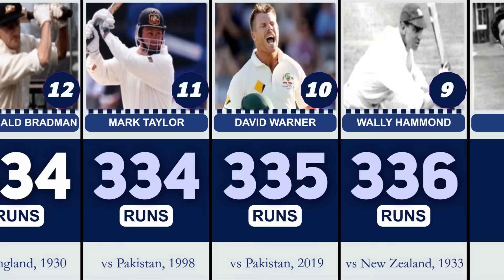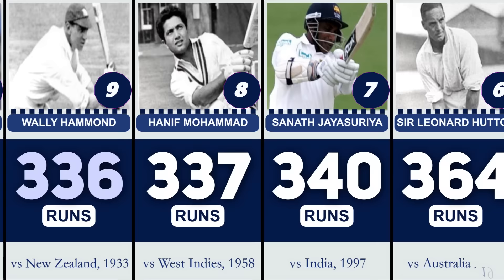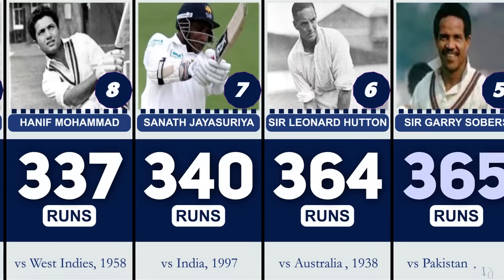Number 9: Wally Hammond, 336 vs. New Zealand. Number 8: Hanit Muhammad, 337 vs. West Indies. Number 7: Sonat Joyshury, 340 vs. India. Number 6: Sir Leonard Whitton, 364 vs. Australia.